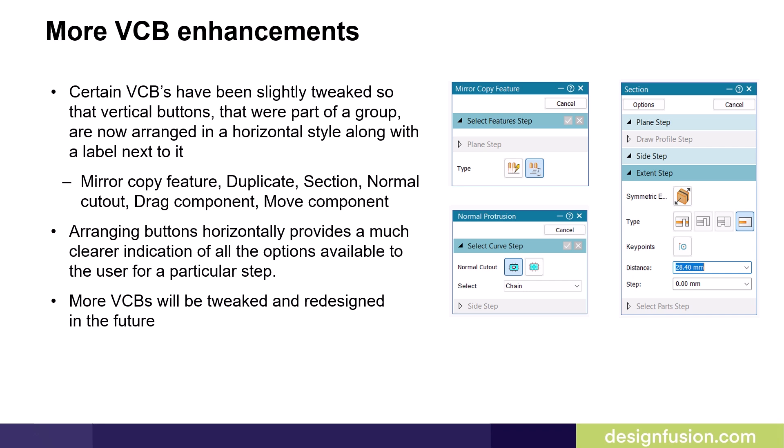Certain Vertical Command Bars have been slightly tweaked so that the vertical buttons that were part of a group are now arranged in a horizontal style along with a label next to it. This provides a much clearer indication of all the options available to a user for a particular step. You will notice this change in the Mirror Copy feature, Duplicate, Section, Normal Cutout, Drag Component, and Move Component commands.